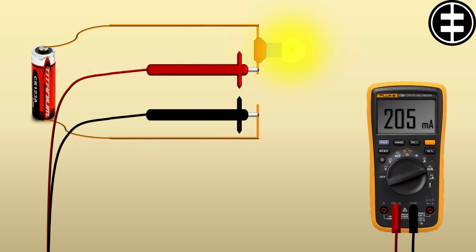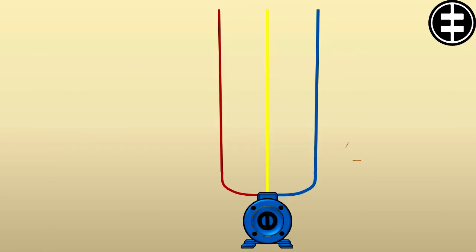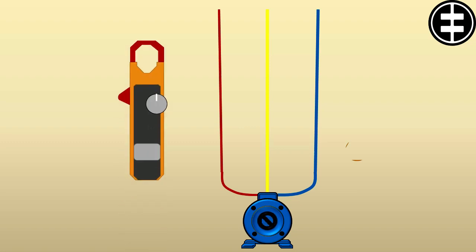Another way to measure the current is the clamp meter, normally used when we need to measure the current without switching off the circuit or with higher values.